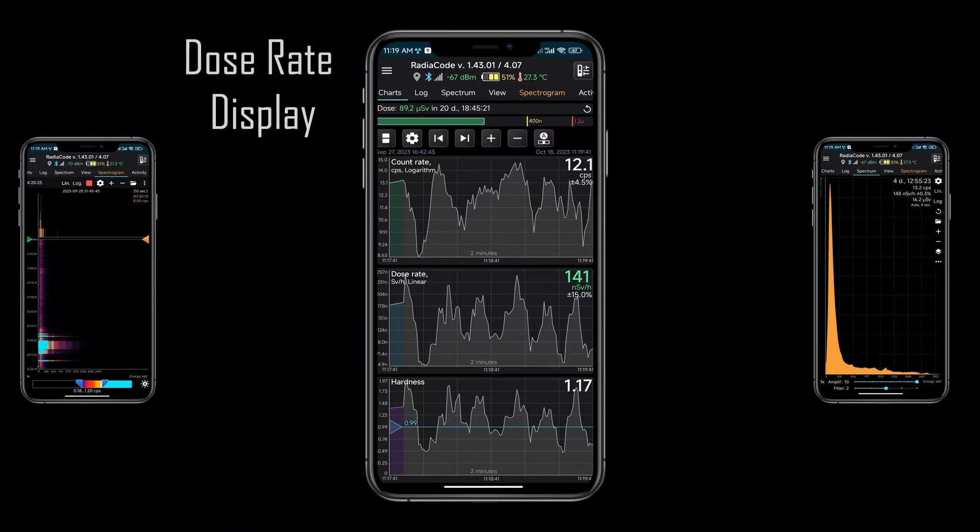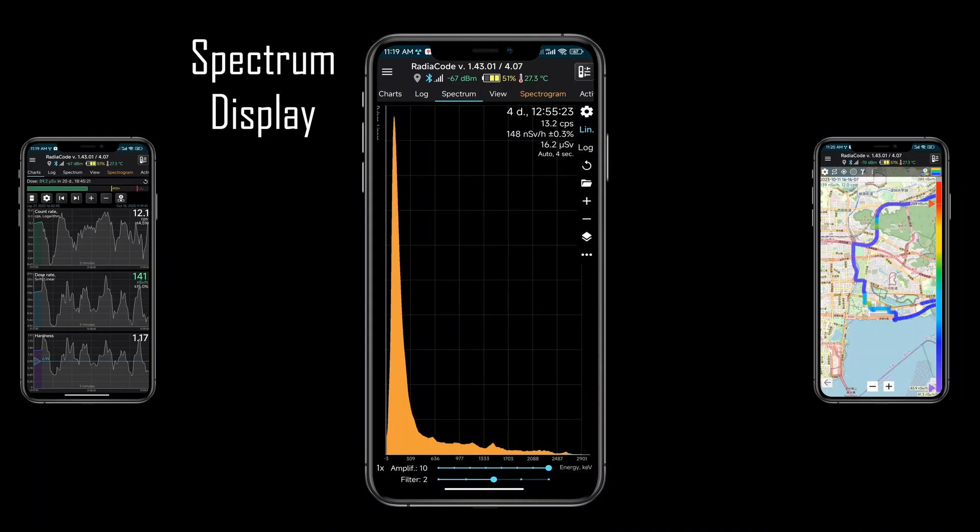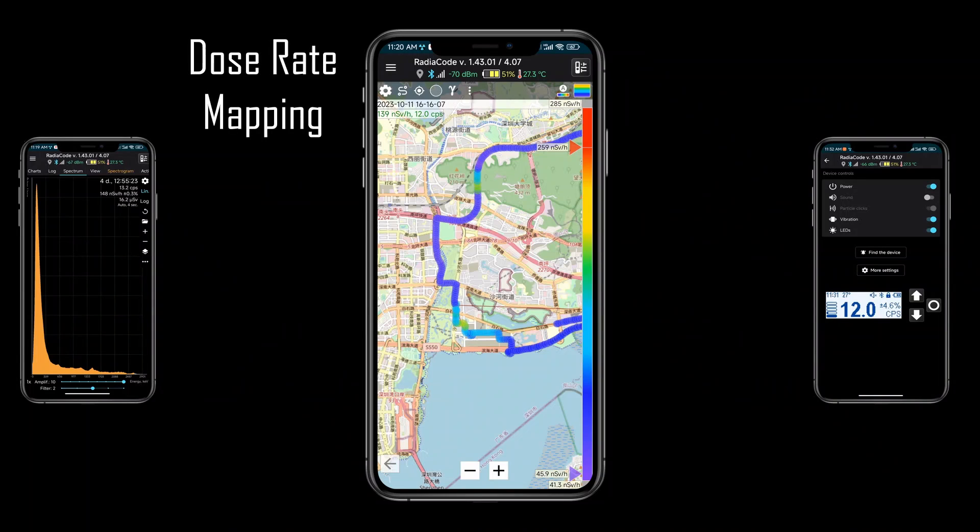The application can log the dose rates over time in either sieverts or rads per hour. It allows spectrum accumulation and isotope identification. Perhaps the most interesting feature of this application is the ability to map the dose rates and then overlay onto a Google or OpenStreet map. In its current form this feature is little more than a very cool gimmick. I will talk about how it could be made more useful later in this video.